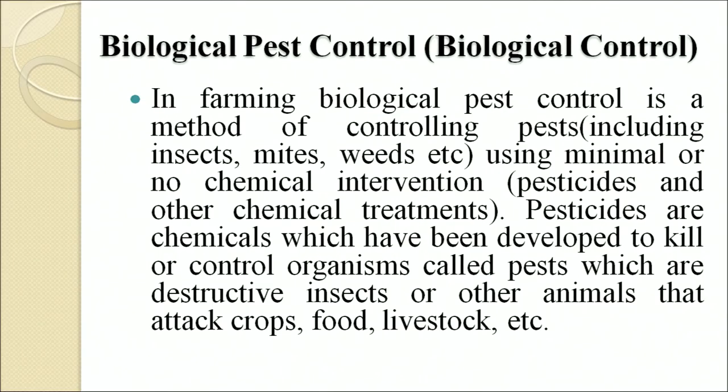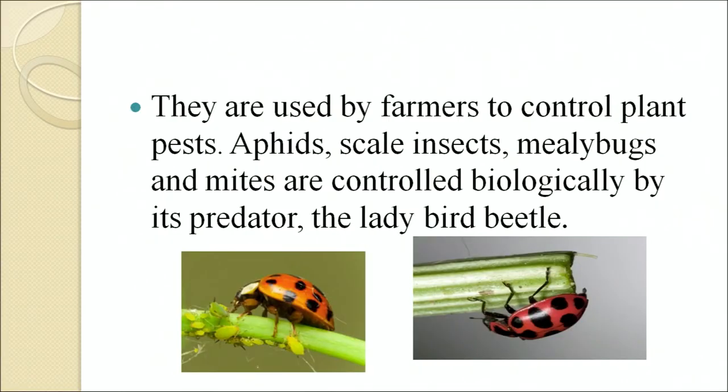Biological pest control is the method of controlling pests using minimal or no chemical intervention. Pesticides are chemicals developed to kill or control organisms called pests, which are destructive insects or other animals that attack crops, food and livestock. Biological pest control employs various natural methods for protecting plants from invasive and harmful pests. The biological control agents do not enter the food chain or poison animals and so are not likely to harm mankind. The natural predators and parasites of pests play an important role in controlling plant pests. For example, aphids, scale insects, mealybugs and mites are controlled by their predator the ladybird beetle.